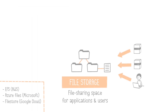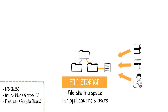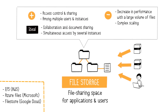Now let's see file storage. File storage is a file sharing solution that presents files to both applications and end users. Data is stored as elements within folders, accessible via a hierarchical path through folders and subfolders. This hierarchical structure is typical of network-attached storage. Examples of file storage offerings include AWS EFS (Elastic File Storage), Azure Files, and Google Cloud File Store. A file system controls file access, sharing, and protection, including password protection.